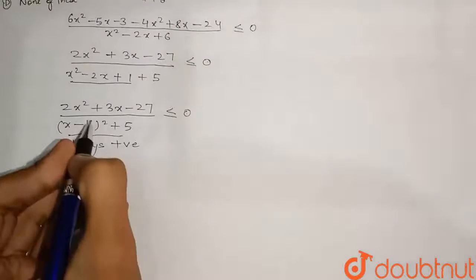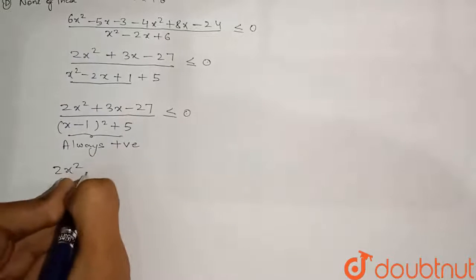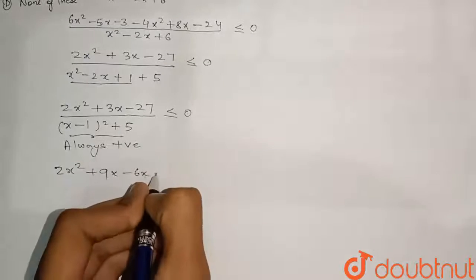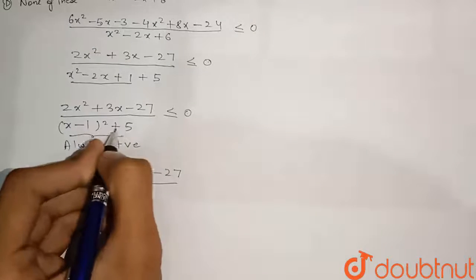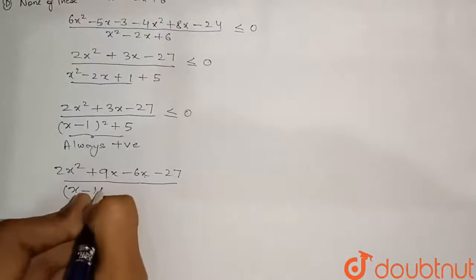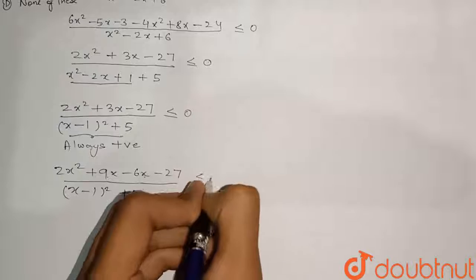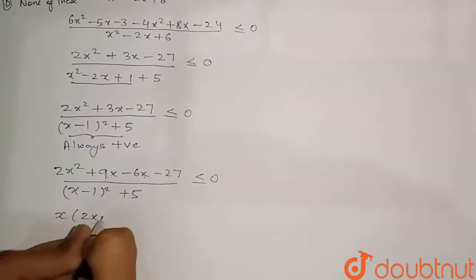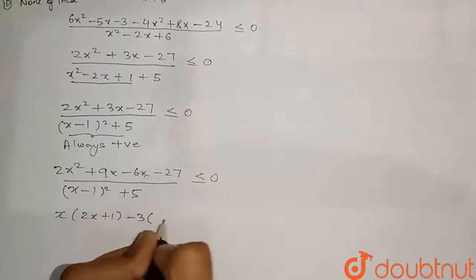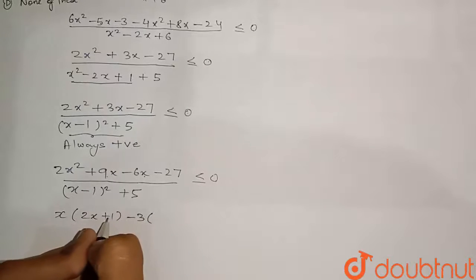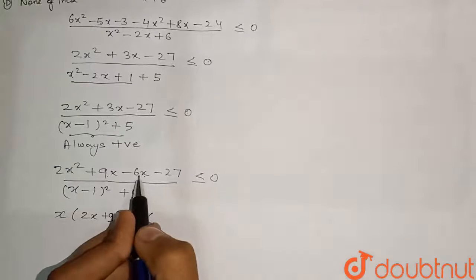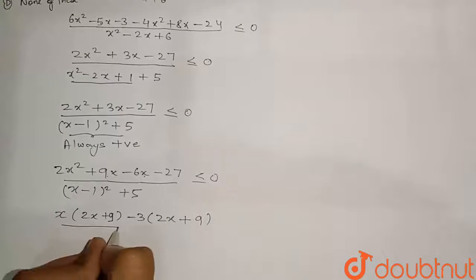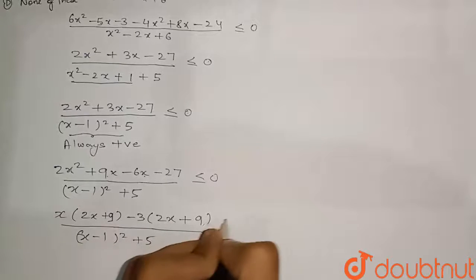Factorizing the numerator 2x² + 3x - 27: we split 3x as 9x - 6x, giving 2x² + 9x - 6x - 27. Taking x common from the first two terms: x(2x + 9), and taking -3 common from the last two: -3(2x + 9). So the numerator factors as (x - 3)(2x + 9). Since the denominator D = (x-1)² + 5 is always positive, the inequality becomes (x - 3)(2x + 9) / D ≤ 0.